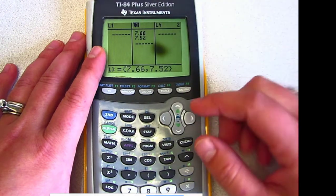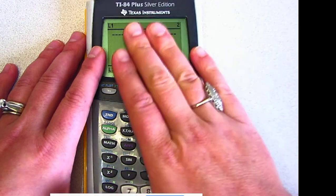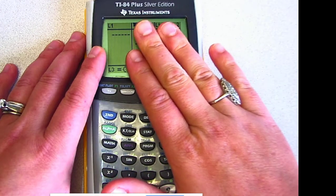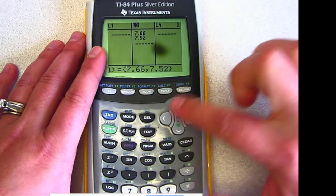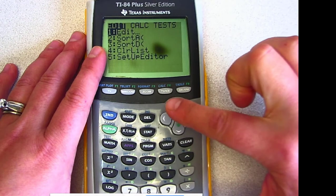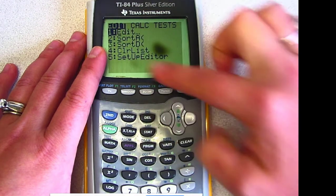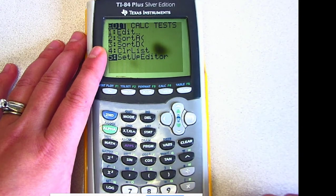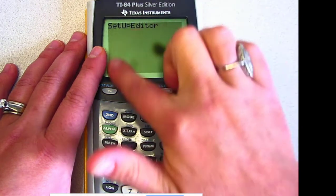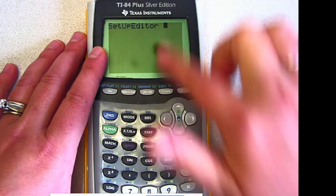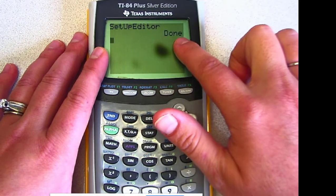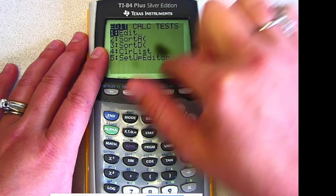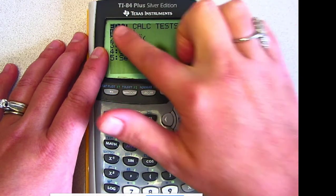It's easy to get it back. Just in case you accidentally deleted a list, go back to the STAT option. In the Edit tab, go down to number 5, which is the Setup Editor. Push Enter, and it goes to your main screen with the cursor blinking. Push Enter again, and it says Done.